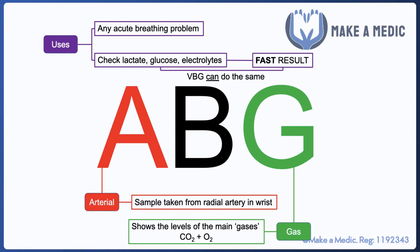If the reason you're doing a blood gas is to look at haemoglobin, lactate, glucose, or electrolytes, then a venous blood gas can provide that information just the same as an ABG. However, if you're trying to assess the function of the gas exchange interface in an acute breathing problem, you will need an arterial blood gas, because you want to analyse the blood that's just come from the lungs where the carbon dioxide and oxygen levels haven't been distorted by passing through respiring tissues.